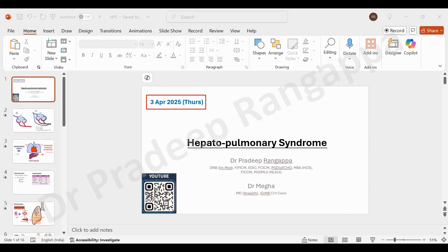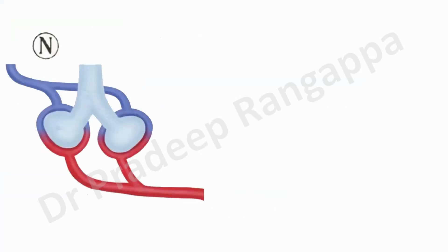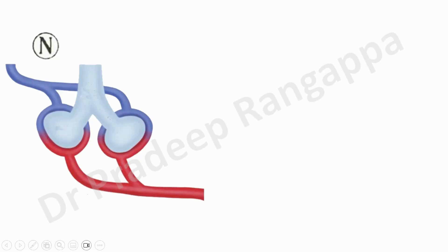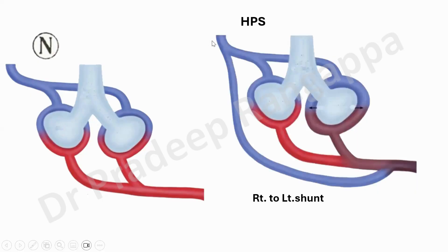Hepatopulmonary syndrome, as the name sounds, involves the liver and the lung. The whole characterization and the problem lies at the pulmonary vasculature. So for all the trainees, pay attention in exams — just keep this pictorial depiction in mind. This is a normal pulmonary vasculature where you have a pulmonary artery and a pulmonary vein, deoxygenated blood and oxygenated blood going back into the left atria. In hepatopulmonary syndrome, there is dilatation of the pulmonary vasculature, and a right-to-left shunt develops with extra pulmonary vessels.